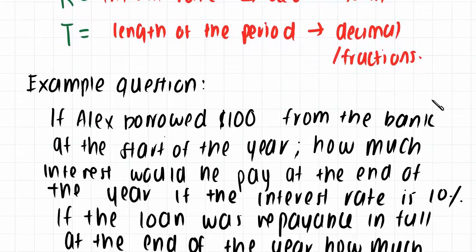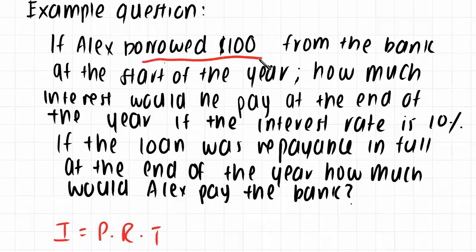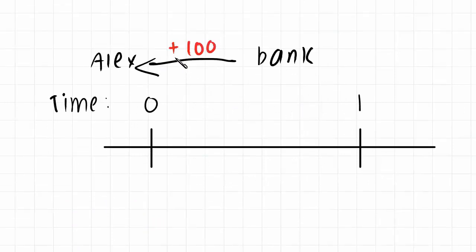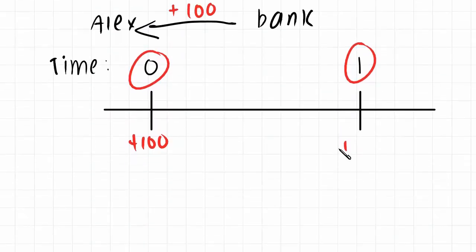Example one: Alex borrowed $100 from the bank at the start of the year. How much interest would he have to pay at the end of the year if the interest rate is 10%? On a timeline, at time zero Alex gains $100. At year one he loses the interest and also has to return the principal amount.